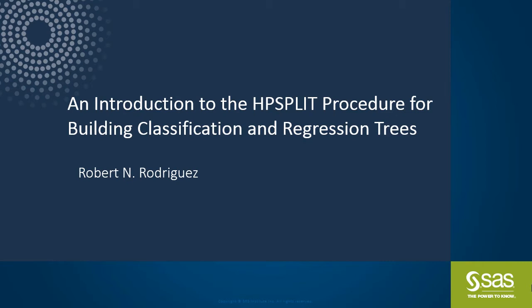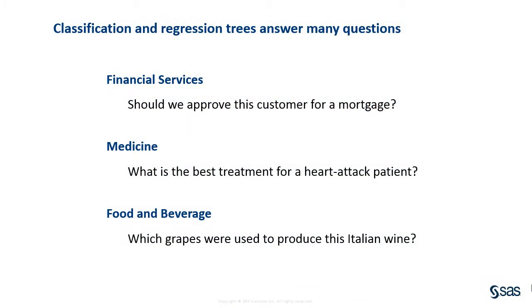The HP split procedure builds tree models for classification and regression. Classification trees model a categorical response, and regression trees model a continuous response. Classification trees are used to make decisions in many fields, from financial services to medicine. In this presentation, we'll build a classification tree to decide which variety of grape was used to produce a sample of Italian wine.